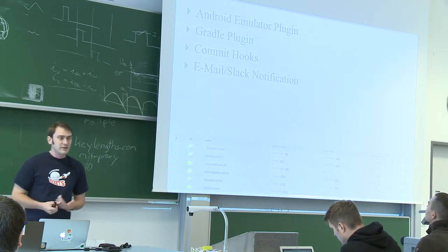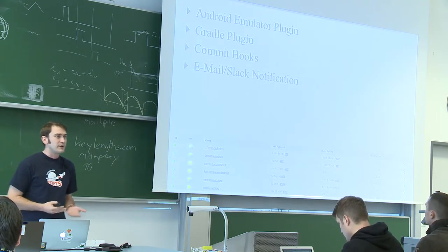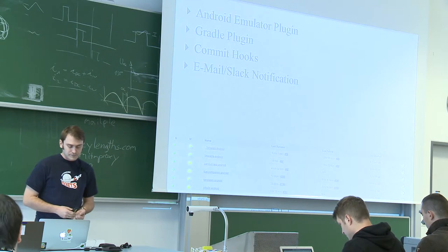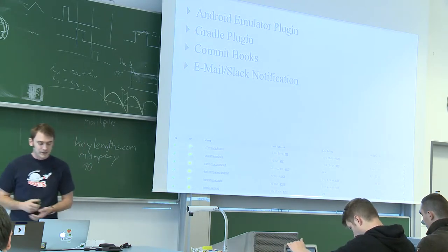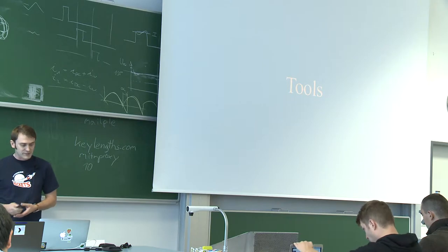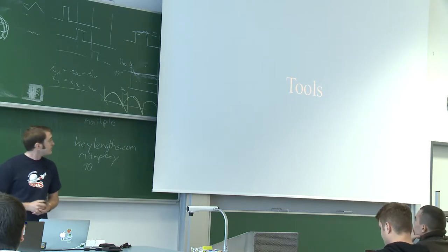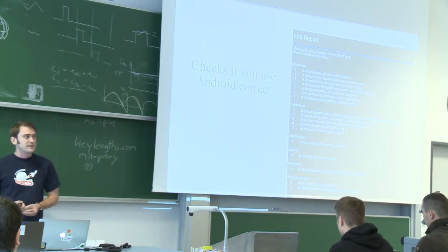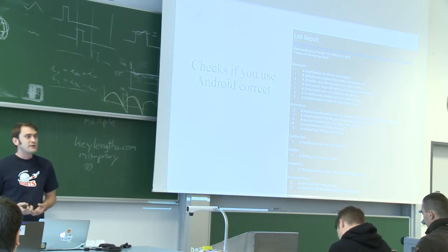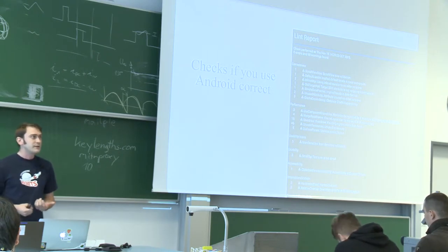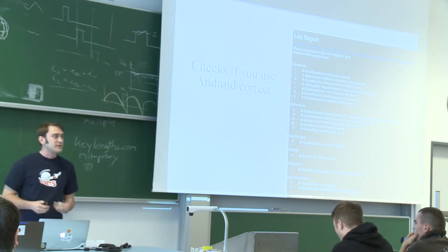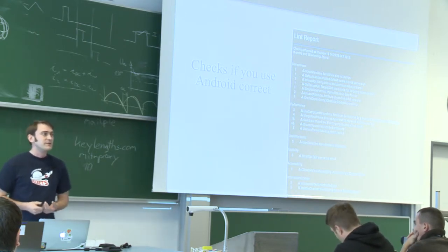So every time a build is done, the code gets checked for everything we can check automatically. What kind of tools are we using? The first one is Lint, which should be obvious to every Android developer, because the Android team does a really good job of adding lint rules for Android. So if you're using the Android SDK in a way that is not supposed to be used, the lint rules will mostly tell you that.